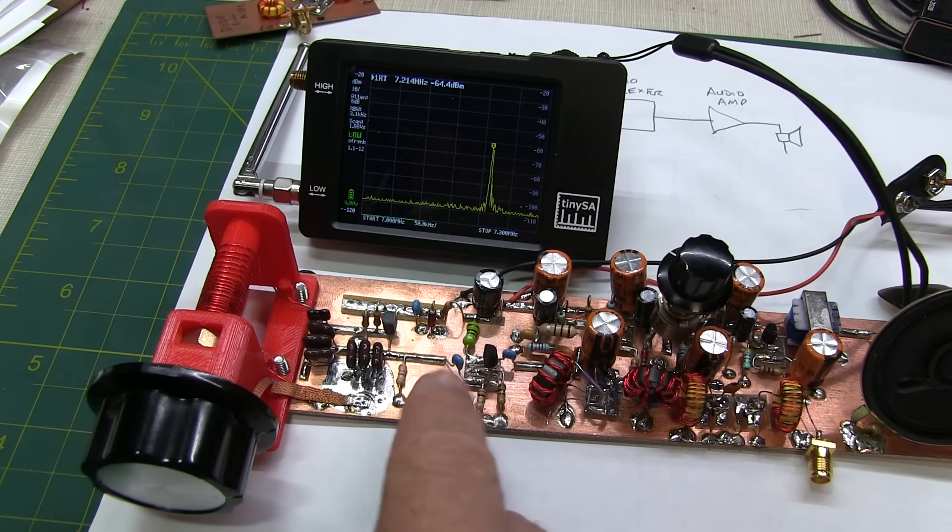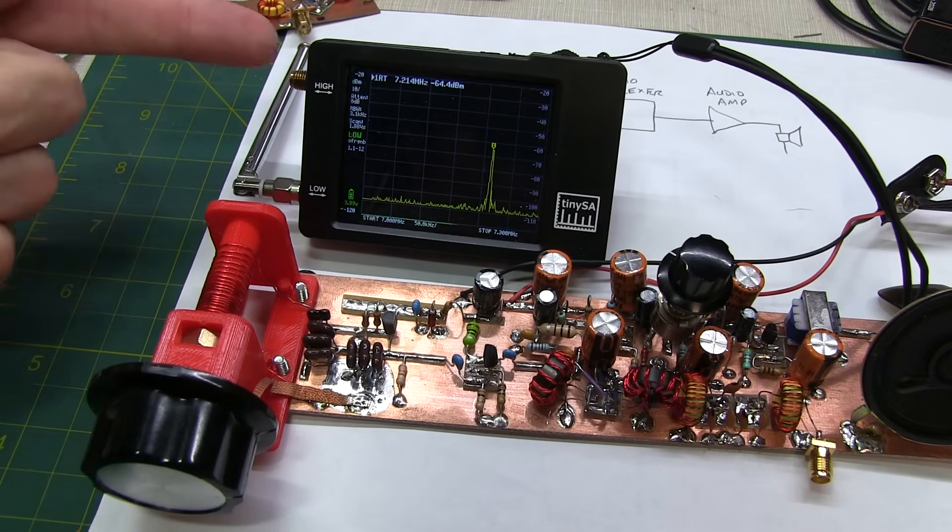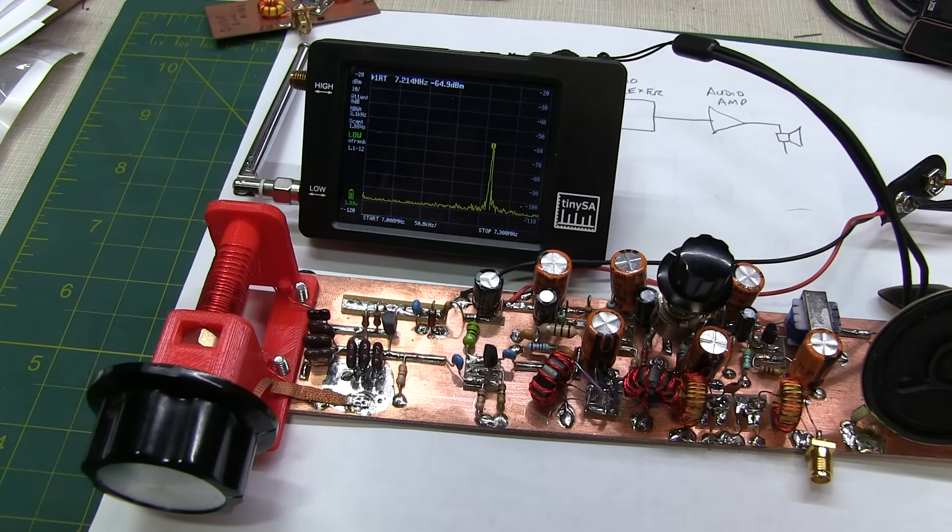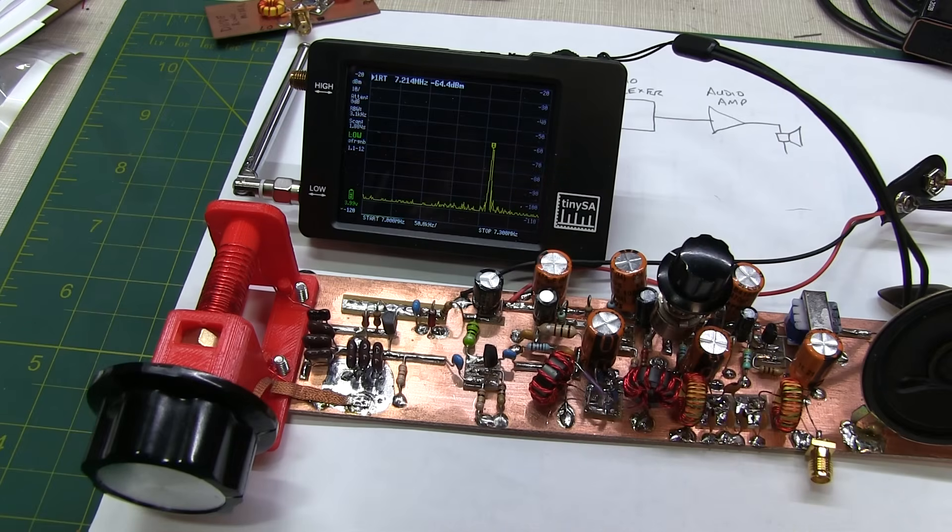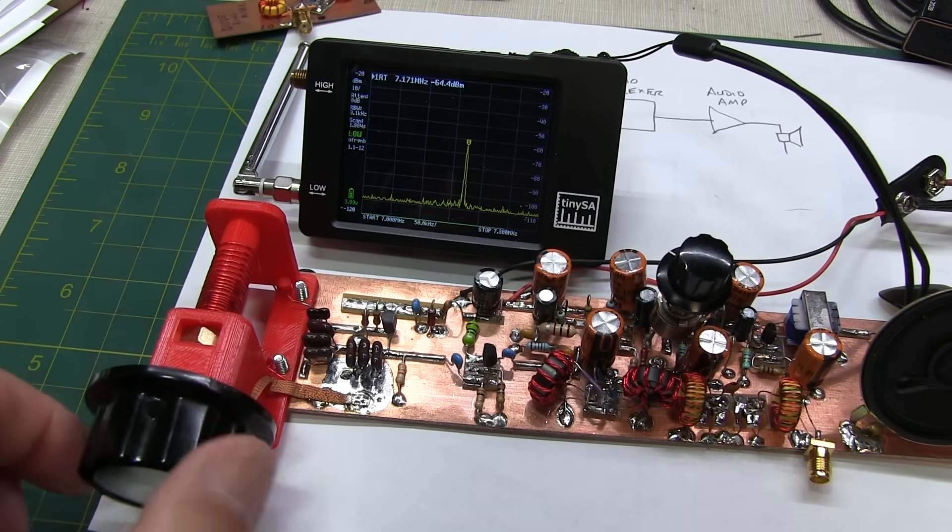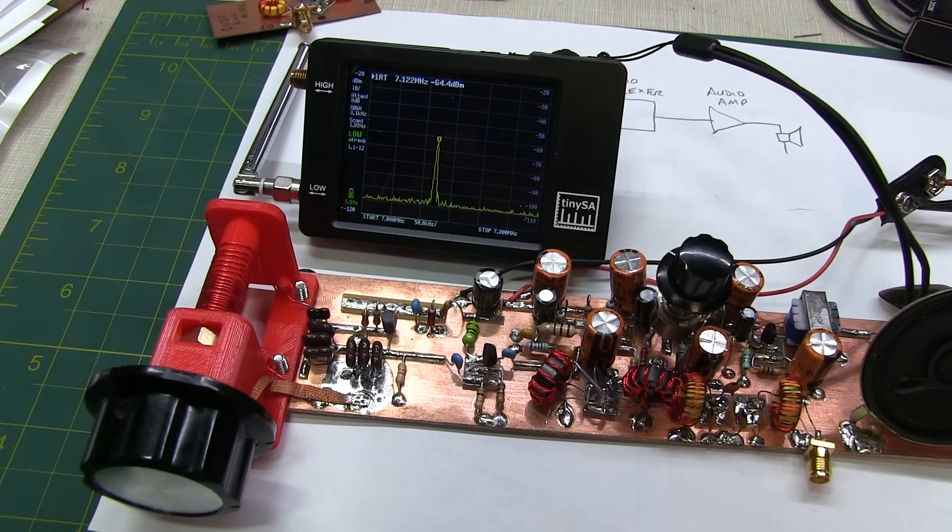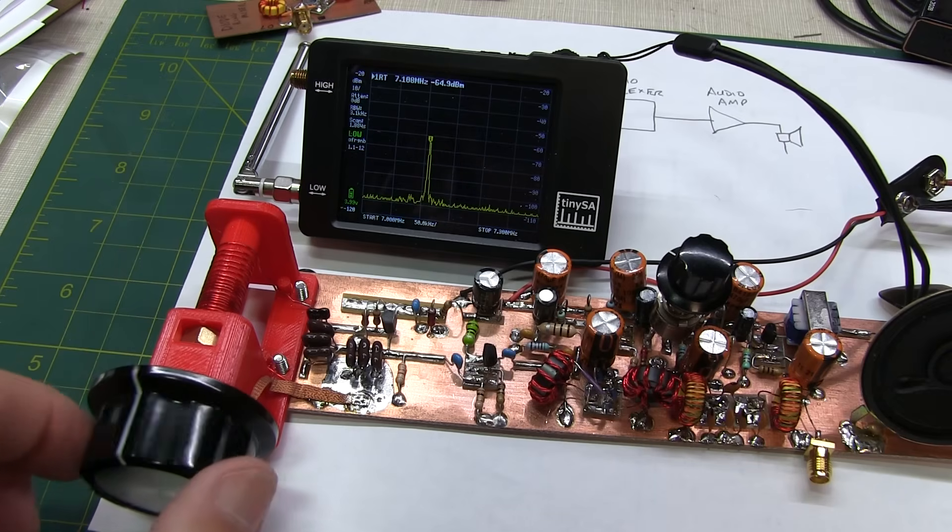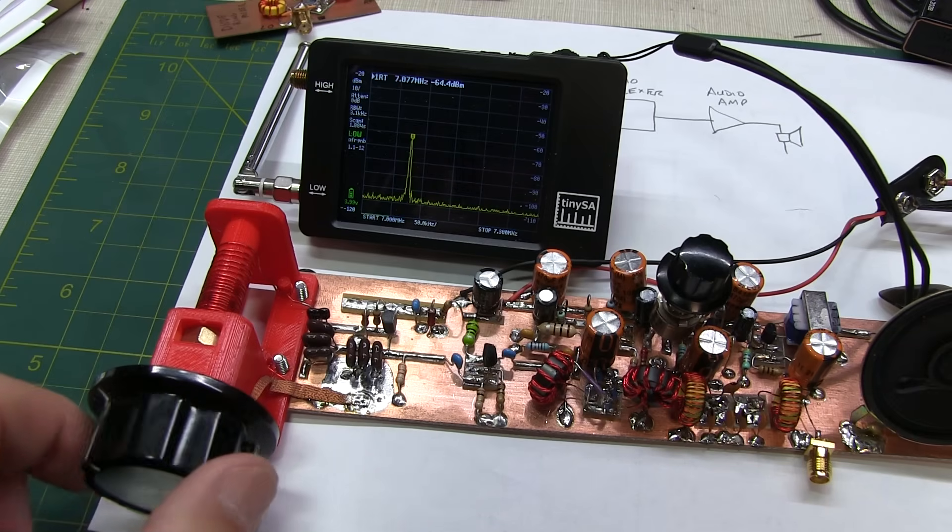So with the tiny SA, I can see my marker is sitting at, in this case, 7.214 megahertz. So that's basically where I'm effectively tuned. And if I adjust my tuning capacitor here, or tuning inductor here, I can actually see the VCO frequency changing. So now at about 7.122 megahertz. So you may have to devise your own way to kind of figure out where your receiver is tuned based on where the local oscillator or the VFO is tuned to.